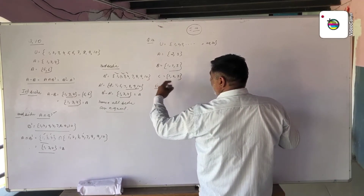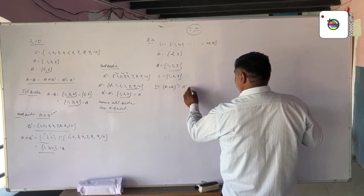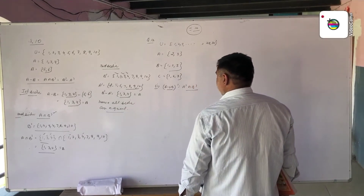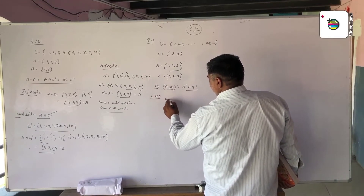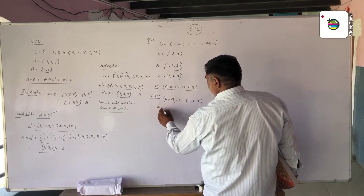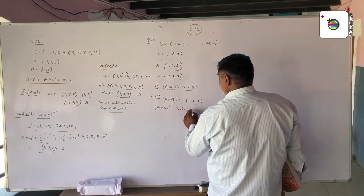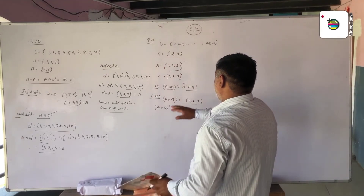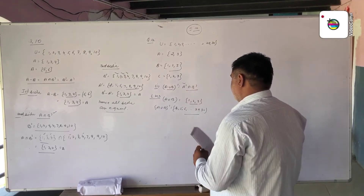We verify four results. The first part: (A intersection B)' equals A' union B'. We find A intersection B, then its complement on the left hand side. For A union B on the left, we take elements and find the complement. Then we find A' intersection B', and show left hand side equals right hand side.